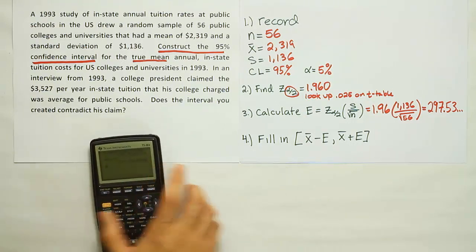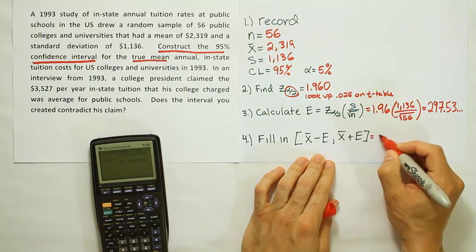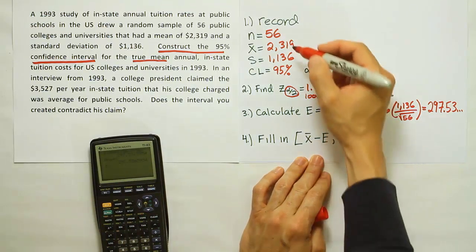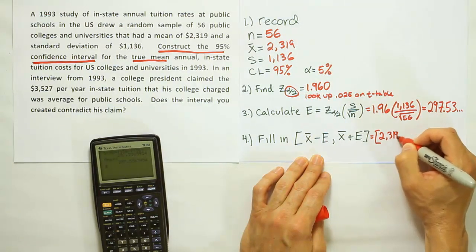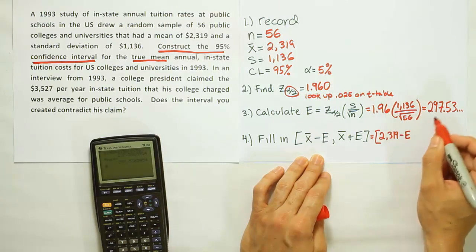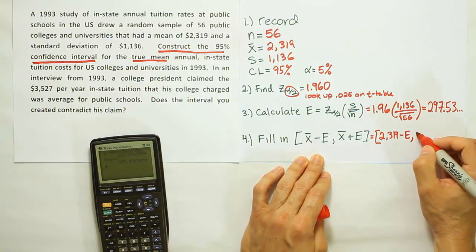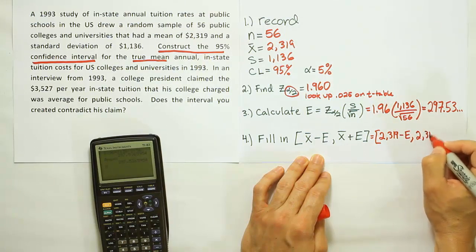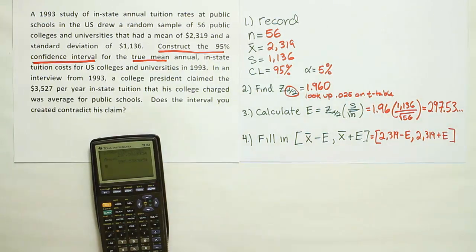The last step we have to do is to simply fill in this little arithmetic problem. Our x-bar from the first step was 2,319. From there, we're going to subtract off that error that we just found in the step above, that 297.53 basically. Then we're going to take the 2,319 again, and we're going to add the error to it. That's going to give us our final answer.